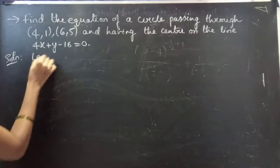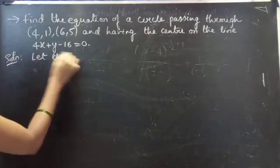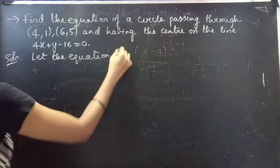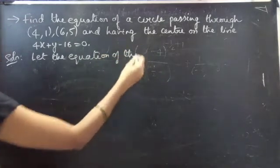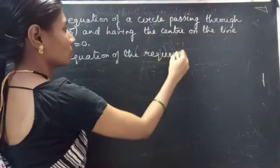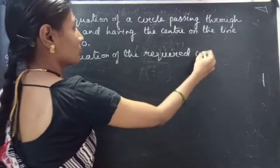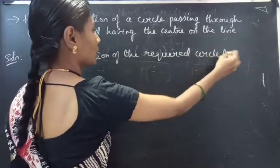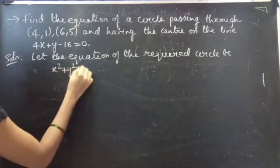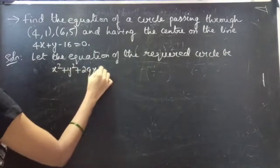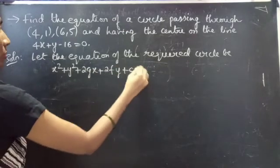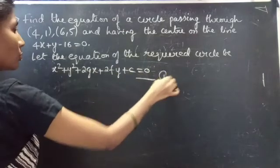Let the equation of the required circle be x² + y² + 2gx + 2fy + c = 0. Consider this as equation 1.